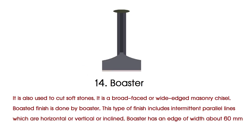Boaster is also used to cut soft stones. It is a broad-faced or wide-edged masonry chisel. Boasted finish is done by the boaster. This type of finish includes intermittent parallel lines which are horizontal, vertical or inclined. Boaster has an edge width of about 60 millimeters.